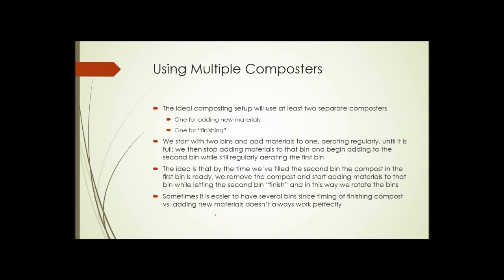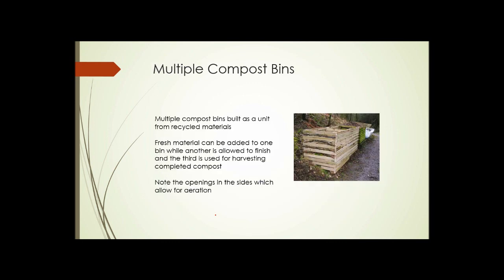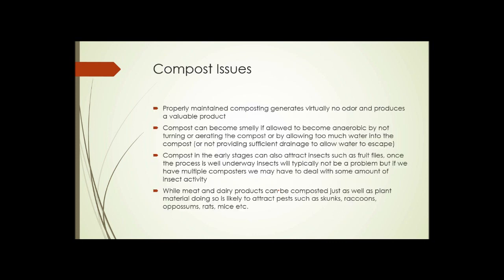Sometimes it's better and easier to have multiple bins, since the timing of finishing the compost versus adding new materials doesn't always work out perfectly. So it's not unheard of to have three or four or five bins, such as this, where we can be adding material to one, we can be letting another one finish. If this one isn't finished by the time this one's full, we can add material to this one. And there's yet another one down on the far end.